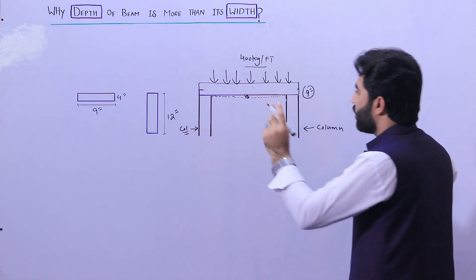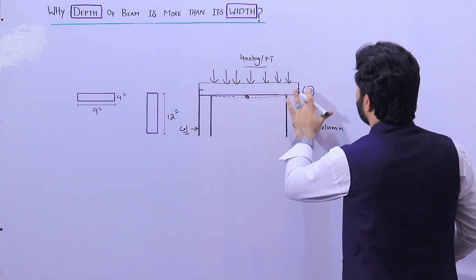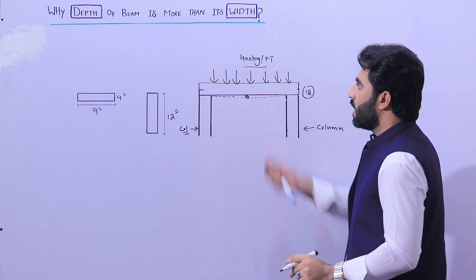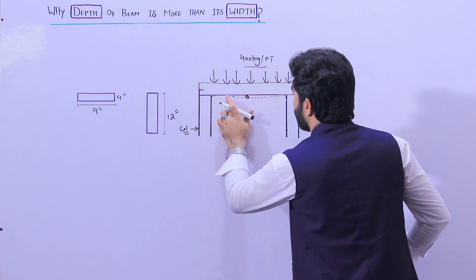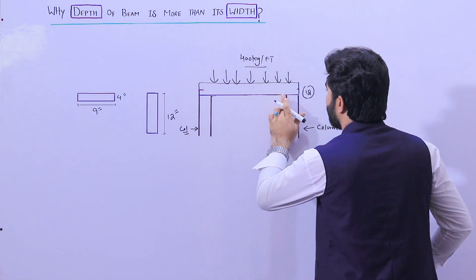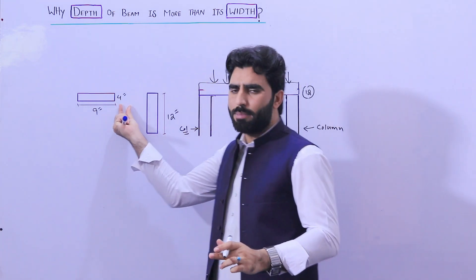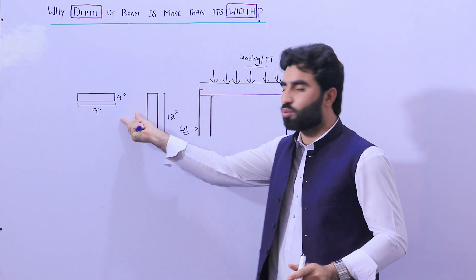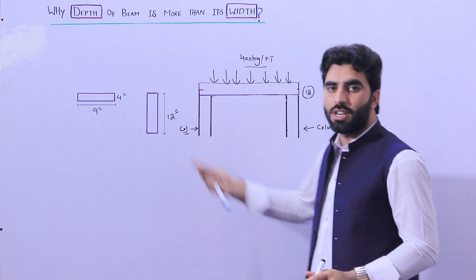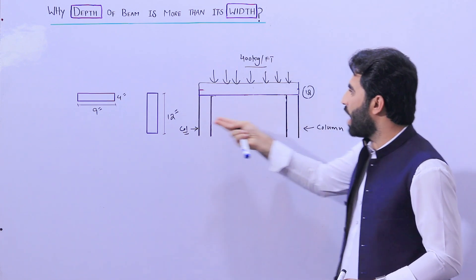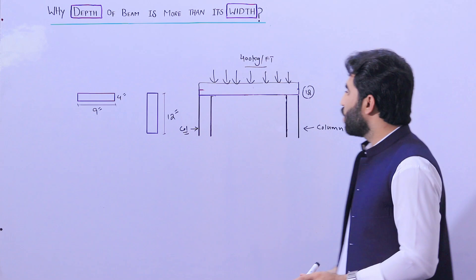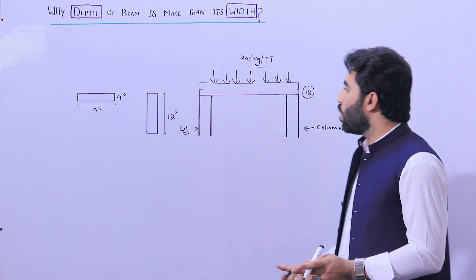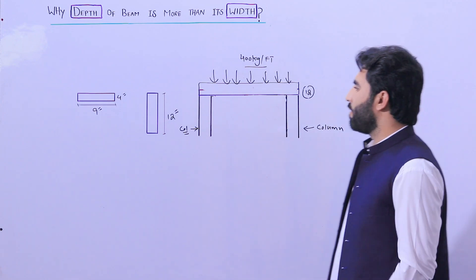Now let me increase the depth to 12 inches with the same load. You can see there is virtually no visible deflection, because it can resist more than this thickness. Four inches can't resist this structural load; 9 inches resists more than that; and 12 inches can resist four times more than 4-inch thickness. Therefore, the depth of the beam should be greater than its width.